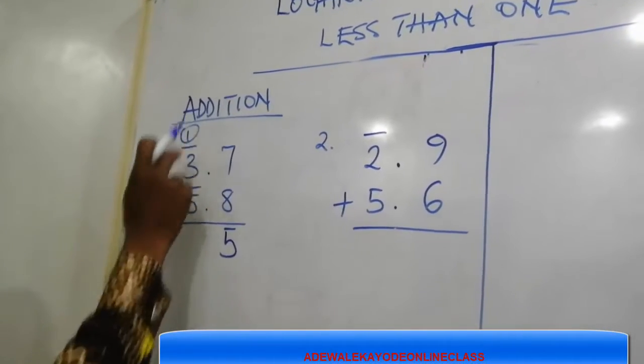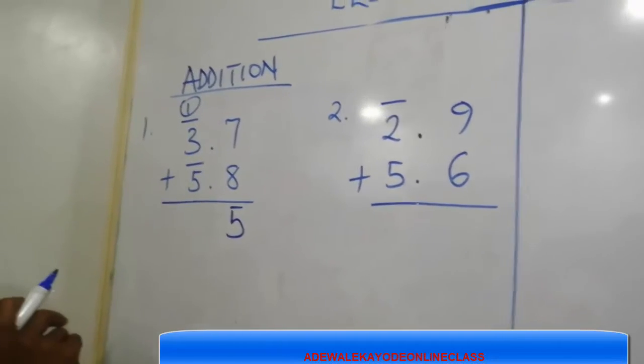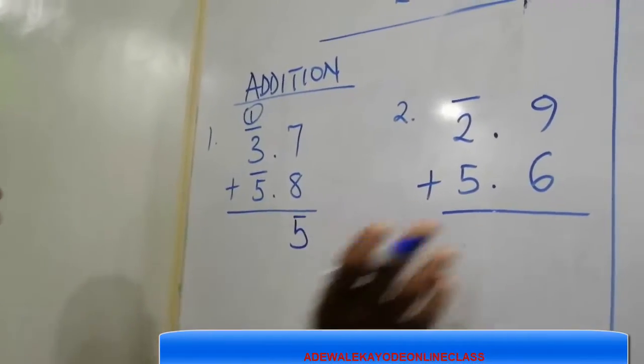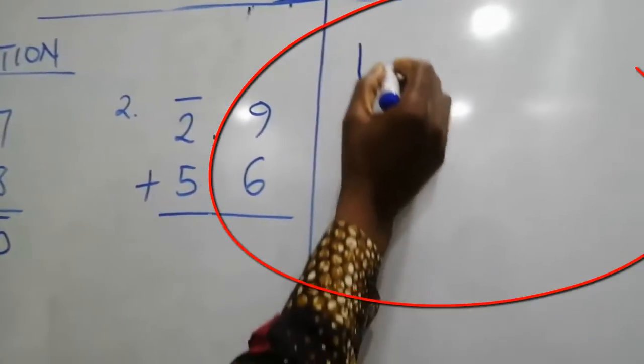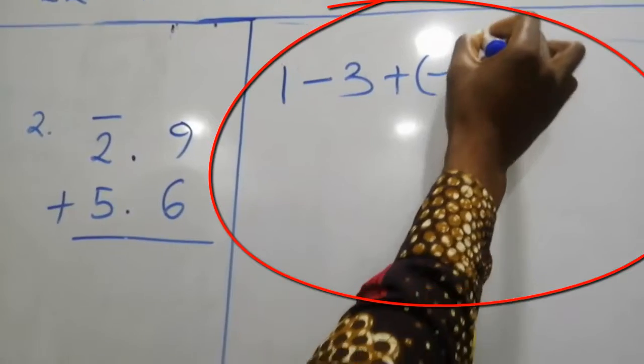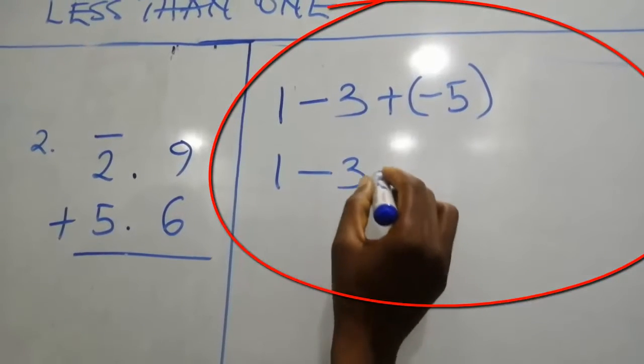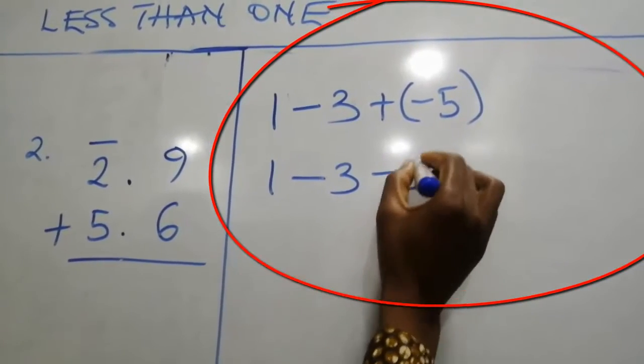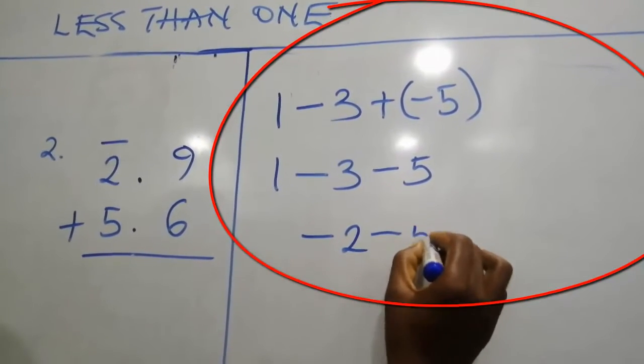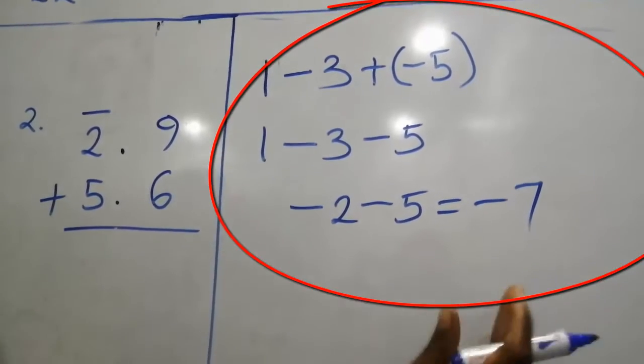Then we have 1 minus 3 plus minus 5. This bar 3 simply means minus 3. So let's perform the operation here. 1 minus 3 plus minus 5, that will give us 1 minus 3, minus 5. 1 minus 3, that is minus 2, minus 5. Minus 2 minus 5, that will give us minus 7.